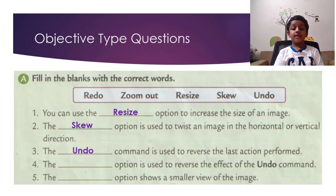The dash option is used to reverse the effect of the Undo command. So the answer is Redo. The dash option shows a smaller view of the image. So the answer is Zoom Out.